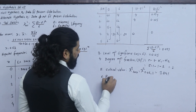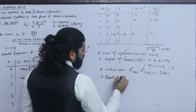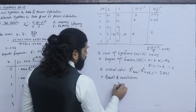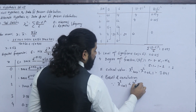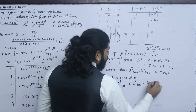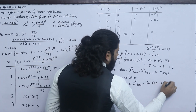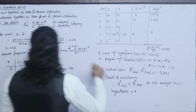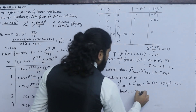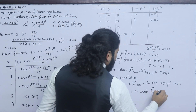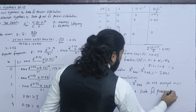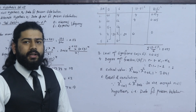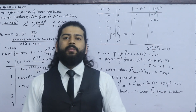Result and conclusion: since the calculated chi-square value is less than the tabulated value, we accept the null hypothesis. That means the data fits the Poisson distribution.